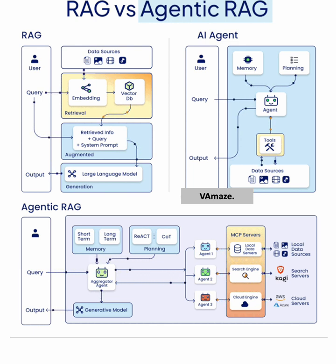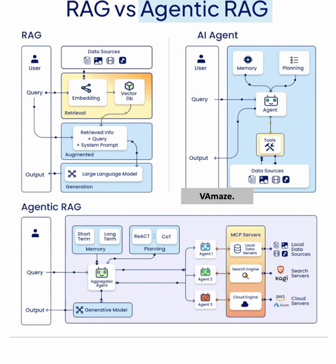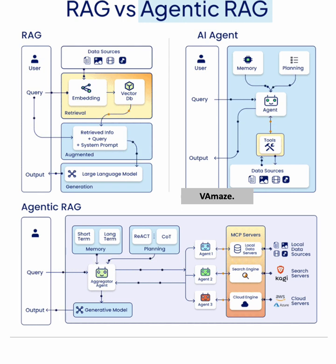The Agentic RAG model integrates the best of both worlds. It combines short-term memory, long-term memory, and the React and COAT chain-of-thought methodologies to handle more sophisticated queries. It leverages MCP servers for processing and interacts with multiple data sources like search engines, cloud services, and local databases.